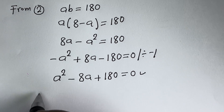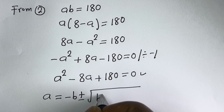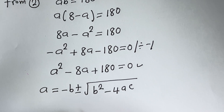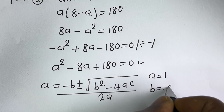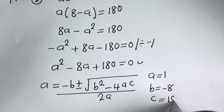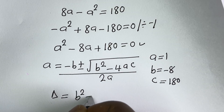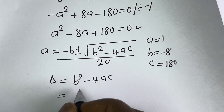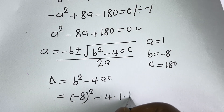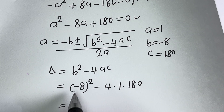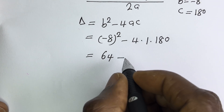A is equal to minus B plus or minus the square root of B squared minus 4AC, all over 2A. From this equation, A equals 1, B equals minus 8, C equals 180. The discriminant D is equal to B squared minus 4AC, which is minus 8 squared minus 4 times 1 times 180.